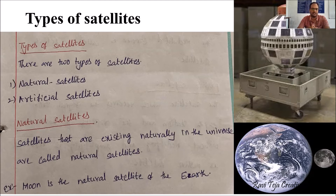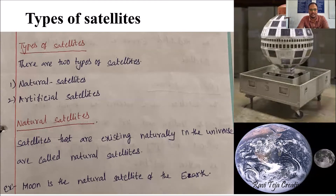Natural satellites are those which exist naturally in the universe. For example, the moon as well as the earth can be considered as natural satellites, because any object which is revolving or moving around any other object in space can be considered as a satellite.